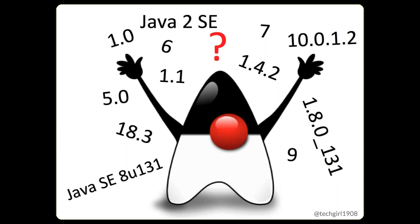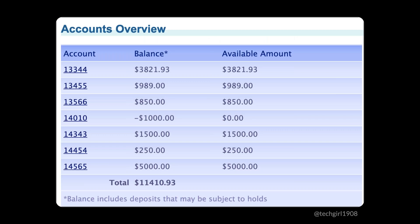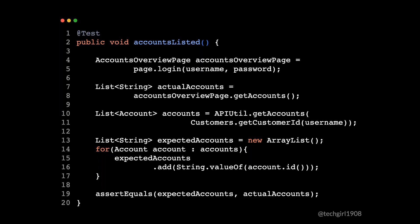So in this talk, I want to demonstrate some of the newer features of Java, especially some of my favorites that I find most useful for test automation. I'll show you, using some code, how to take advantage of them in writing your tests. We're going to look at some automation code for verifying a banking page. The specific test we'll go over today is just going to make sure that all of the accounts are listed.